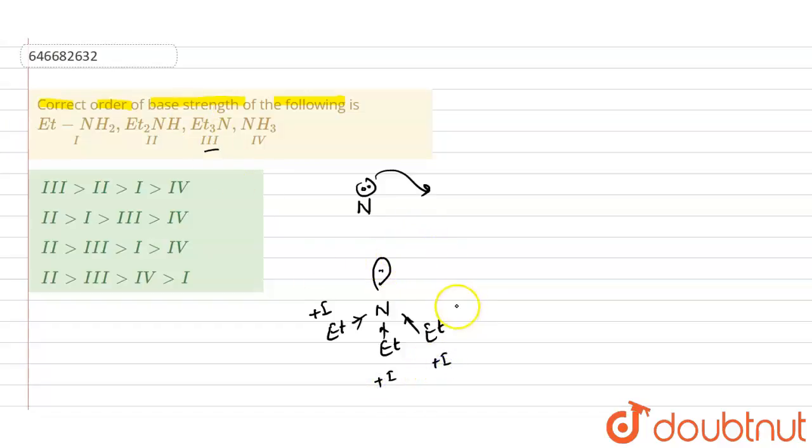So it can donate a lone pair of electron very easily. After that we will have this second one. In that compound we have two ethyl groups, so two electron donating groups are present, so it will will also increase the electron density, but that will be less as compared to this third one.